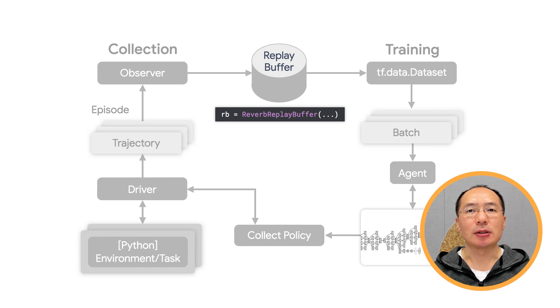This has two advantages: better data efficiency by reusing each transition in many updates, and better stability by using unrelated transitions in a batch.